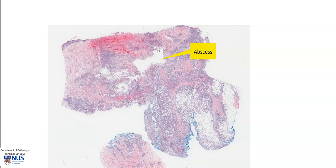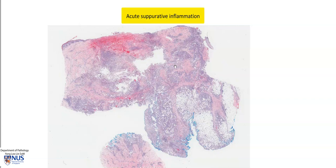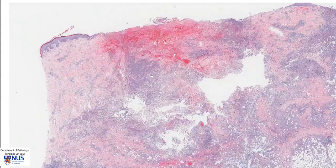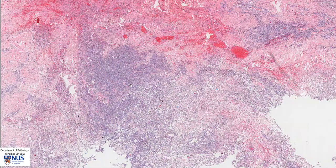We can see that there are large areas of bluish cellular infiltrates within the dermis, also an abscess cavity forming here, and these bluish cellular infiltrates extend deep into the subcutis. All these are areas of acute suppurative inflammation. There is also a little bit of hemorrhage here, potentially due to the trauma of the surgical procedure. Let's have a closer look at these bluish cellular infiltrates.